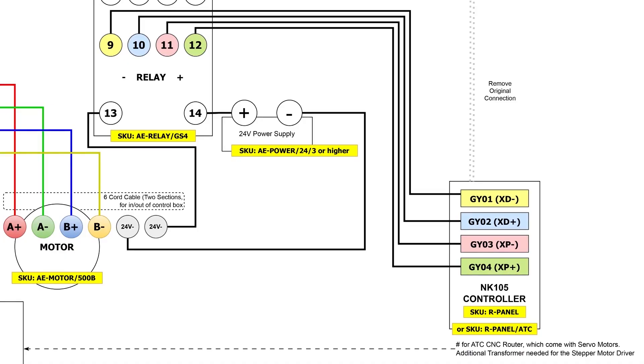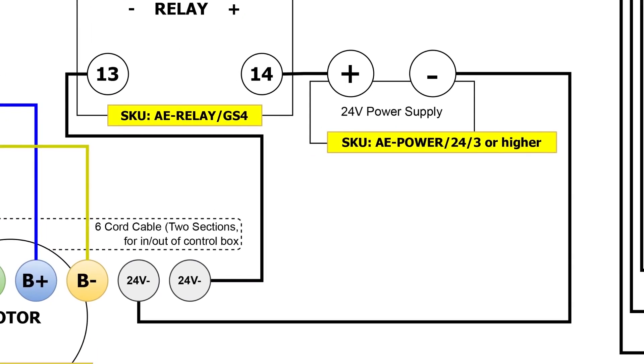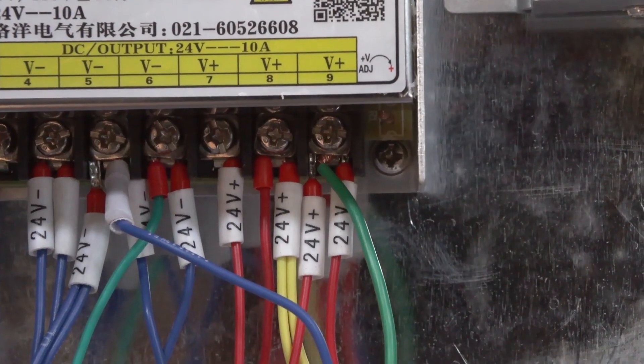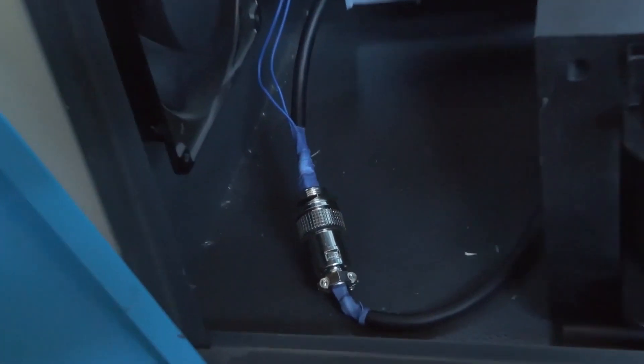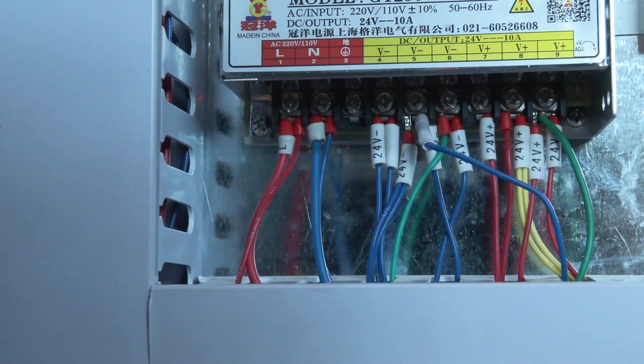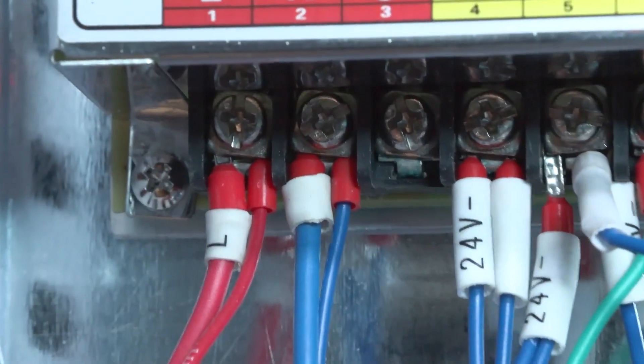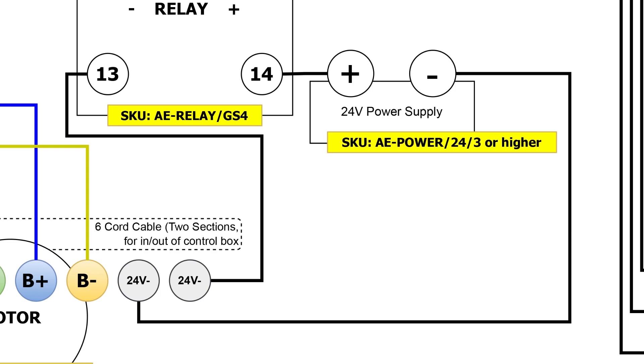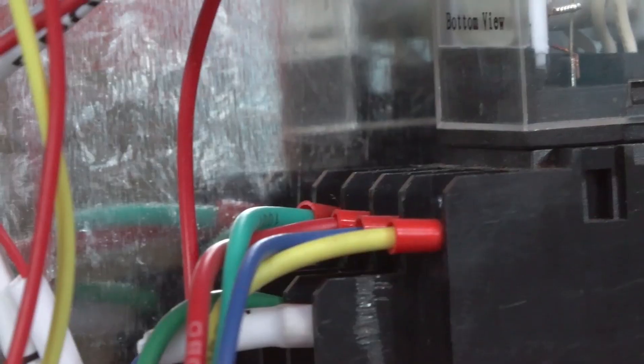Now what is left is the switching cable. Terminal 14 on the relay goes to a positive 24-volt power supply, the negative side of which is joined to one side of the cable marked 24-volt negative. The other side of the cable marked 24-volt negative goes to terminal 13 on the relay. With